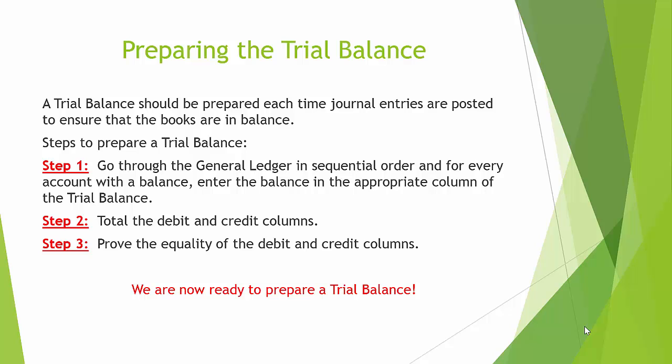A trial balance should be prepared each time journal entries are posted to ensure that the books are in balance. The steps to prepare a trial balance are: Step 1, go through the general ledger in sequential order and for every account with a balance, enter the balance in the appropriate column of the trial balance. Step 2, total the debit and credit columns. Step 3, prove the equality of the debit and credit columns.